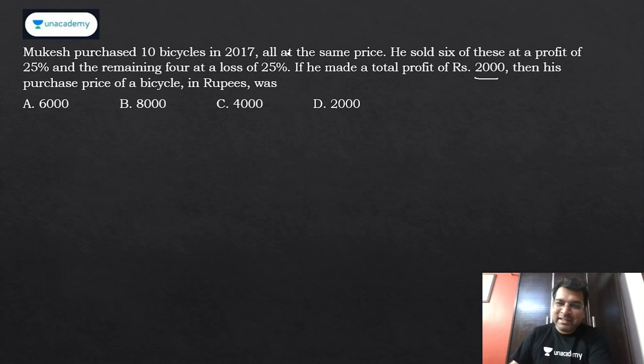The idea of giving this question is that I can solve it without writing anything, mentally. Think of it like weighted average. Six of them are sold at a profit of 25%. In another way, can I say that 25% profit is given a weight of six, and 25% loss is given a weight of four?